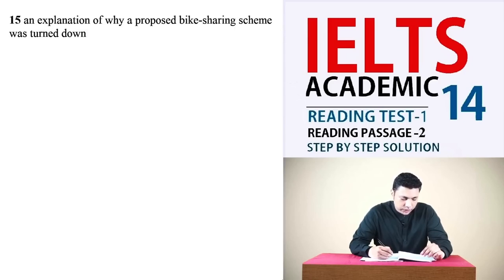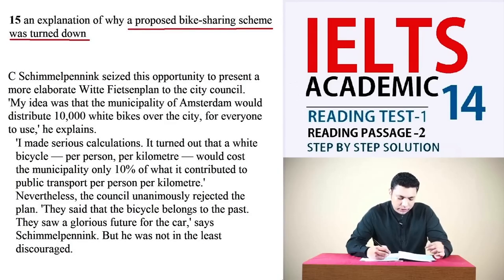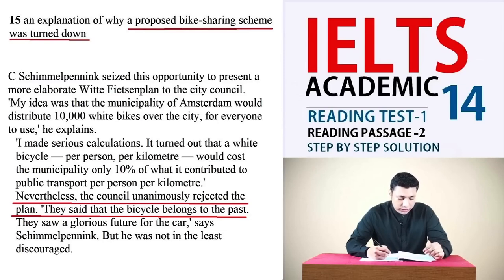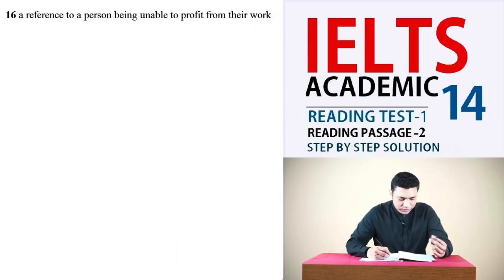The next question: 'An explanation of why a proposed bike sharing scheme was turned down.' Keywords are 'proposed bike sharing scheme' and 'turned down.' In the sixth and seventh lines of paragraph C, the author says the council universally rejected the plan — they said that the bicycle belongs to the past and saw a glorious future for the car. 'Rejected' is paraphrased as 'turned down,' so the answer is C.